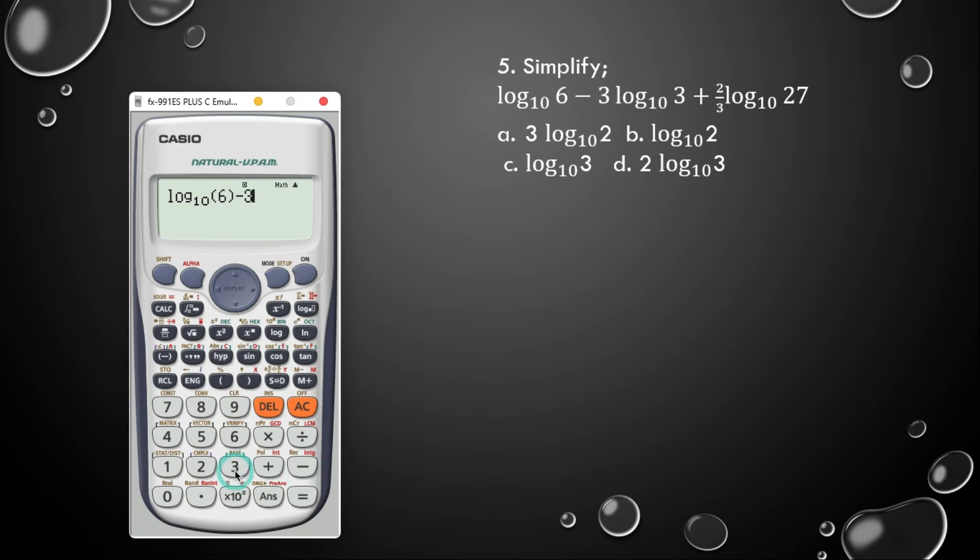So log 6 to the base 10, log 6 to the base 10, minus 3 log 3 to the base 10, log 3 to the base 10, plus 2 log 3, multiply by log 27 to the base 10. Then hit the equal sign.